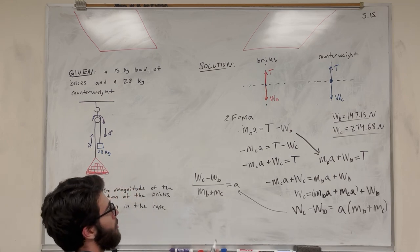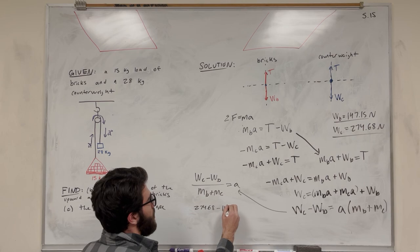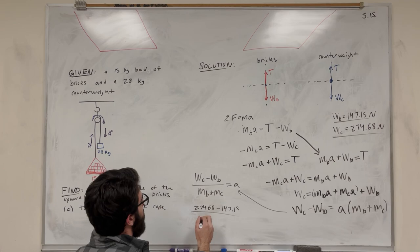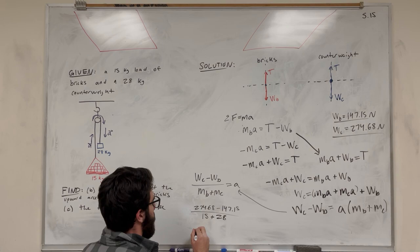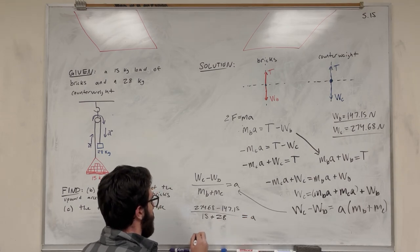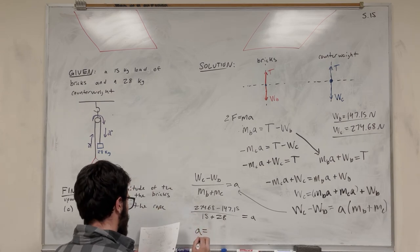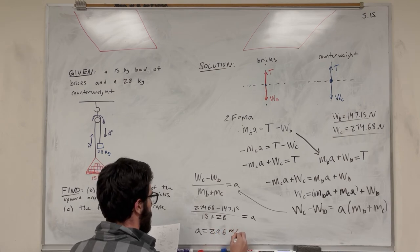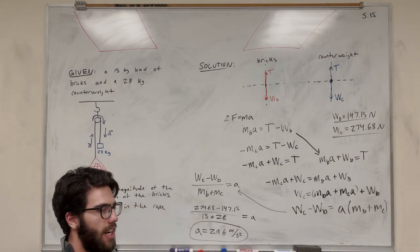Plugging in the numbers: (274.68 minus 147.15) divided by (15 plus 28). That gives acceleration equal to 2.96 meters per second squared. That's the answer to Part B.